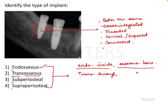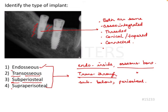The second option is transosseous implant — 'trans' meaning through and 'osseus' meaning bone. Does it pass through the bone? We can't fully gauge from one IOPA alone. The third option is subperiosteal implant — 'sub' means below and 'periosteal' refers to the periosteum, so subperiosteal means below the periosteum.